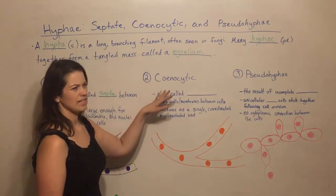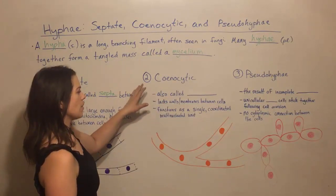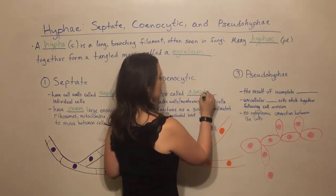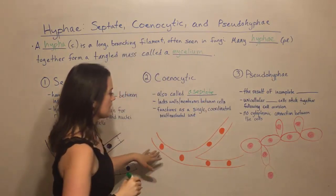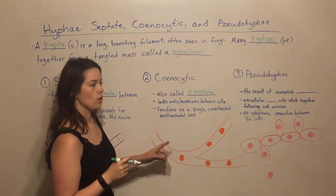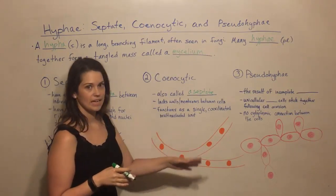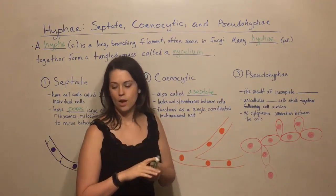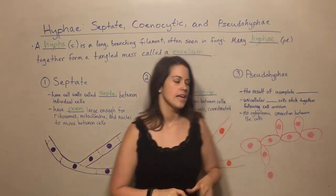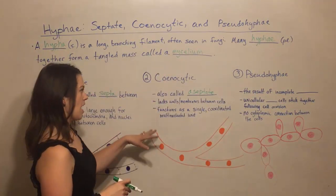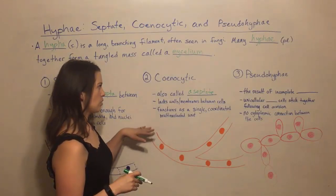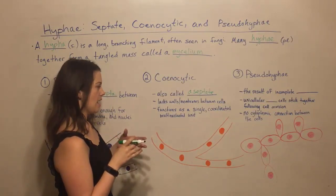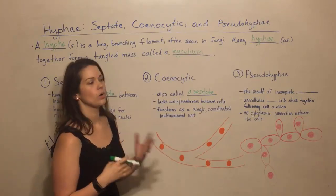Our next type is coenocytic — sometimes pronounced synocytic — also called aseptate hyphae, because they lack the septa. As you can see in the drawing, they completely lack any kind of cell wall or cell membrane between the cells. The orange circles you see are the nuclei. Whereas the nuclei in septate hyphae were separated by the septa, here they're not separated by anything. Coenocytic or aseptate hyphae really function together as a single unit — multiple nuclei, but in a very coordinated fashion.